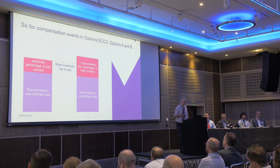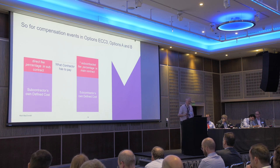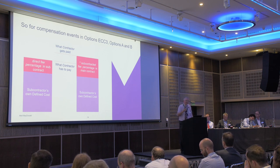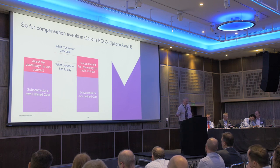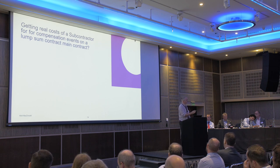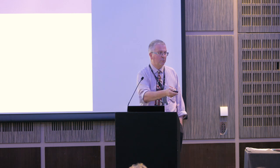So in options A and B, we use the shorter schedule of cost components for subcontractors, and most of that's real cost — hence the question: do you know how much the subcontractor pays his joiner? Do you really care? Probably not. From a contractor's perspective, you're going to have to pay out the subcontractor's defined cost in the subcontract plus the direct fee percentage, and get paid the same subcontract defined cost plus your subcontract fee percentage. But does the contract ever require you to show the project manager the subcontractor's real cost of his people? Lots of heads being shaken.